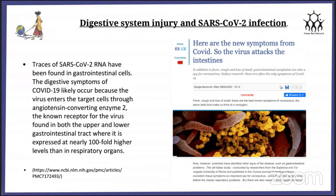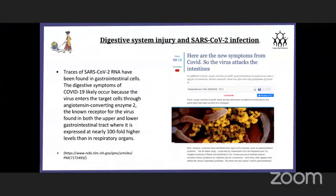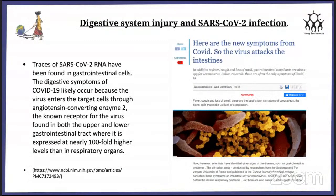Thank you, Aditi. Now I would like to explain digestive system injury and SARS-CoV-2 infection. As Aditi mentioned, there are a high number of ACE2 receptors in our gastrointestinal tract; therefore, traces of SARS-CoV-2 RNA have been found in gastrointestinal cells. The digestive symptoms of COVID-19 likely occur because the virus enters the target cell through this ACE2 receptor, which is present in 100-fold higher concentration than in the respiratory organs.